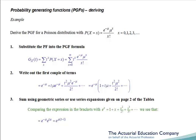You should be able to derive PGFs for all of the standard discrete random variables given in the tables: the Bernoulli, the binomial, the Poisson, the geometric, and the negative binomial.